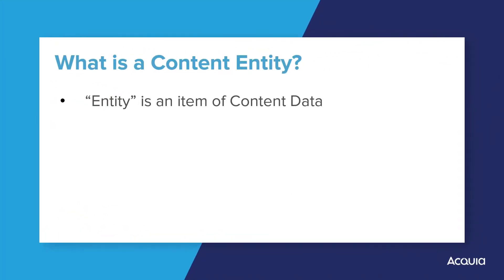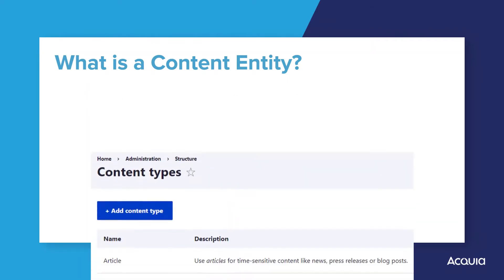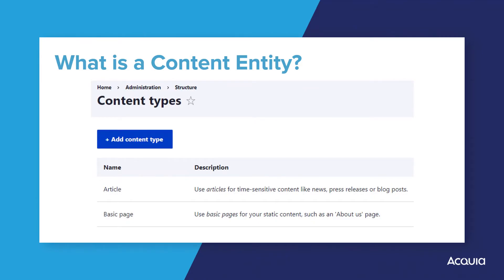A content entity, simply called an entity, is an item of content data intended to be displayed to site visitors. Perhaps one of the most common entity types you will encounter are content types. There are two content types included with Drupal core: articles and basic pages. The fundamental difference between the two content types is their different default settings and the structured data they collect.